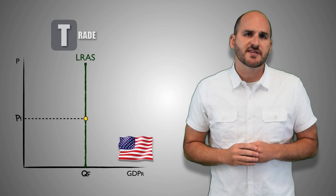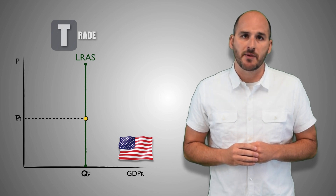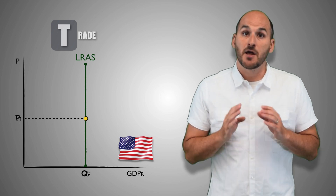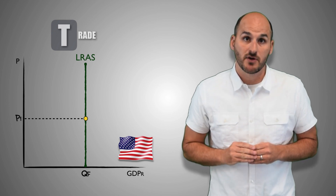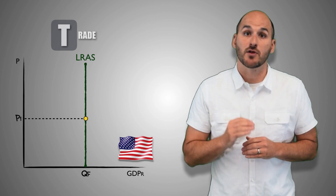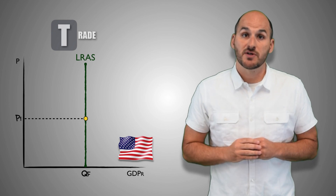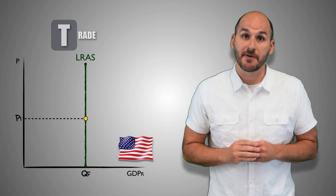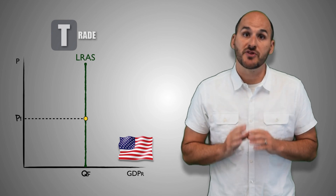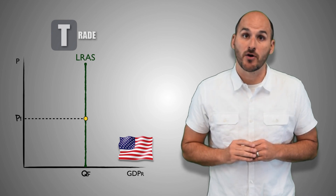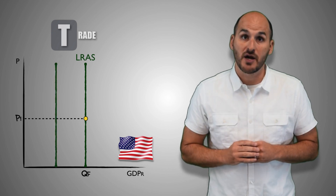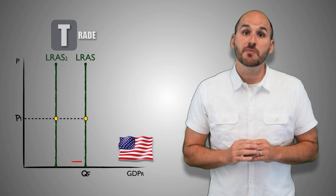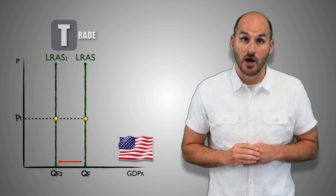For example, suppose the United States government repeals a free trade agreement with Canada and Mexico. Imported resources in the production of goods and services in the American economy will become more expensive, and production costs will increase in the long-run. As a result, American firms will lose the capacity to produce real GDP output at every price level. The breakdown of trade between the United States and their North American partners will increase the price of imported resources and will cause a decrease in long-run aggregate supply, which ultimately decreases production possibilities for the American economy.